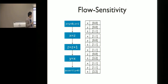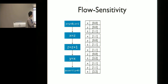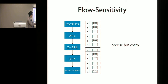In this example, the analysis is flow-sensitive because it computes different abstract states at each different program point. A flow-sensitive analysis can be precise in general because it is likely to prove the assertion, as in this example. But the problem is that it is quite costly to separately analyze all program points like this.